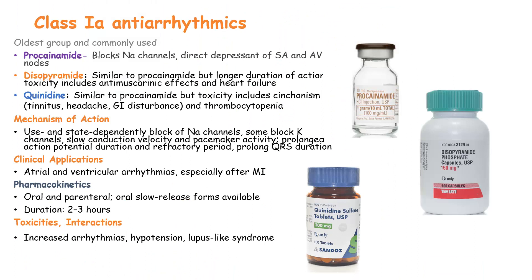Under class 1A antiarrhythmics, the three common drugs are procainamide, disopyramide, and quinidine. Procainamide works by blocking the sodium channels, directly suppressing the sino-atrial and ventricular nodes. Disopyramide has similar activity to procainamide but has a longer duration of action; toxicities include antimuscarinic effects and cases of heart failure. Quinidine has similar effects as well, but toxicity includes cinchonism — a triad of tinnitus, headache, and gastrointestinal disturbances — and also causes thrombocytopenia.